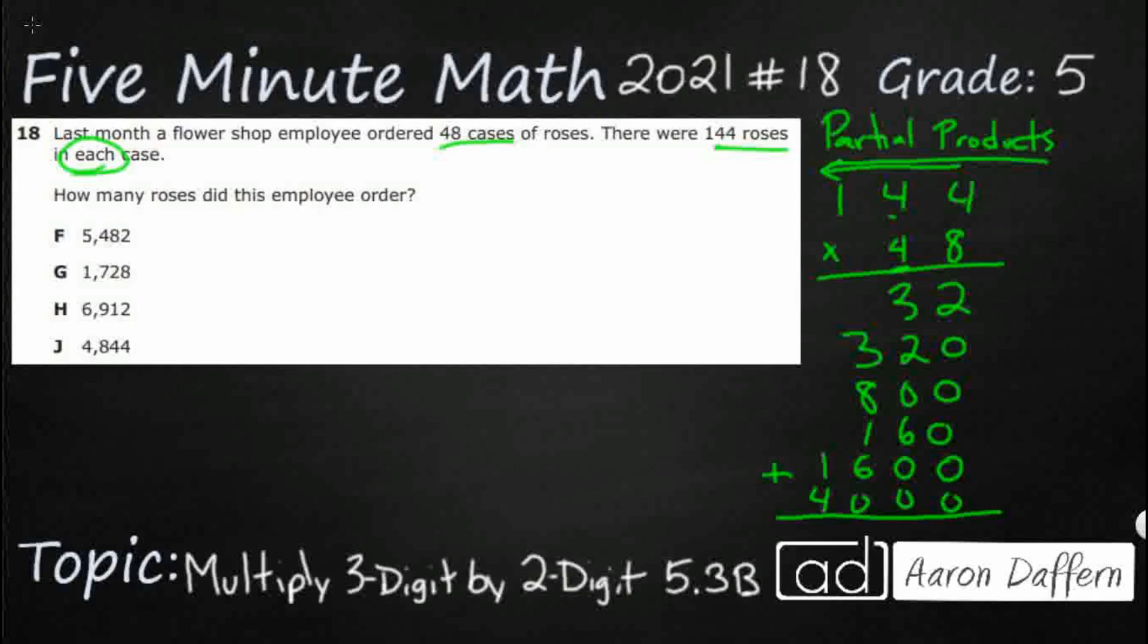We've got 2. This is going to be 5, 11. Let's see. This is going to be 1, 2, 3, 4, 12, 13, 19. All right. And then we've got 1, 2, 3, 4, 5, 6. There we go. So 6,912, which is looking like H.